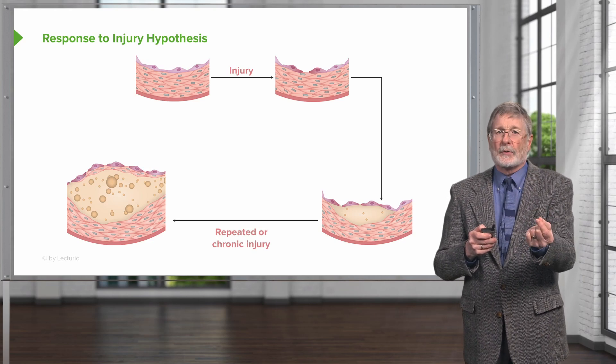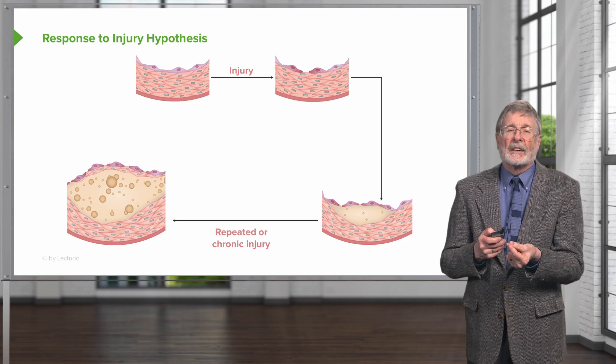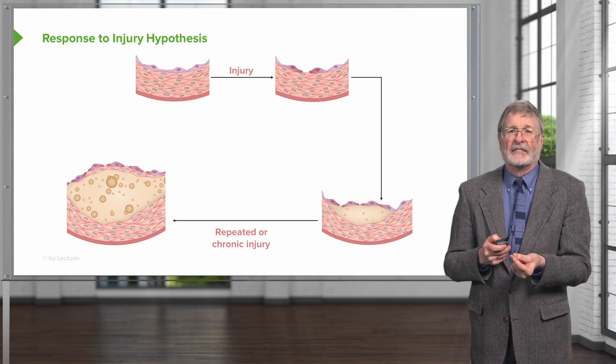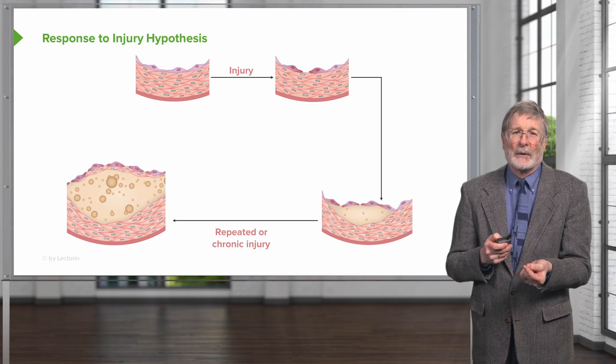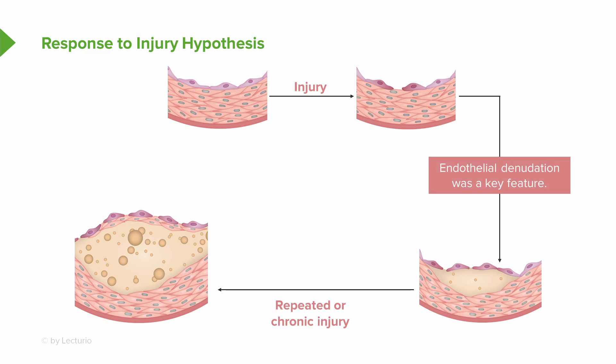A brilliant hypothesis, except it wasn't really accurate. It turns out that endothelial loss — denudation — was described as a key feature, but that turned out to be wrong. In fact, the endothelium is not lost in atherosclerosis.